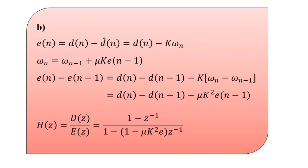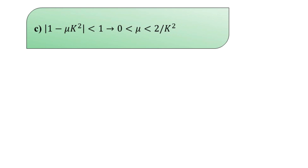For part c, we determine the range of values for mu for which H(z) is stable. The adaptive filter is stable if |1 − μK²| < 1. Applying this condition, the step size mu must satisfy 0 < μ < 2/K². This is the range of step-size values for which H(z) is stable.